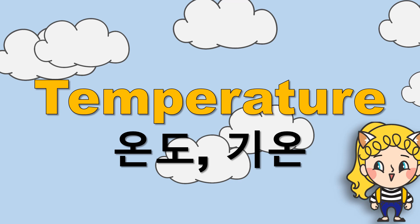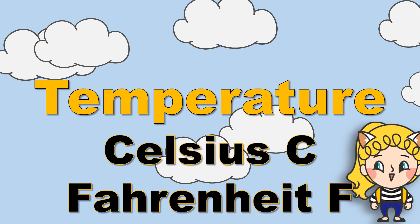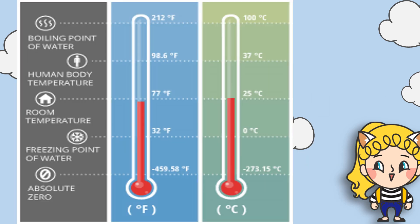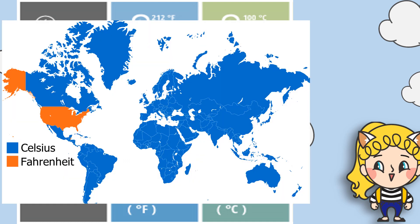Now let's talk about temperature. There are two kinds of temperature: Celsius and Fahrenheit. They both measure temperature but use different numbers. For example, to make ice, that is 32 degrees Fahrenheit, but zero degrees Celsius. But don't worry — only a few places use Fahrenheit. Most places use Celsius.